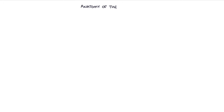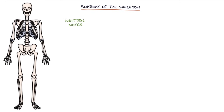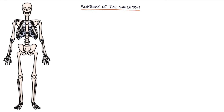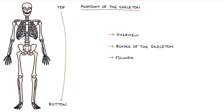Hi, this is Tom from ZeroToFinals.com. In this video, I'm going to be going through an overview of the anatomy of the skeleton. You can find written notes on this topic at ZeroToFinals.com/skeleton, and flashcards to test your knowledge at ZeroToFinals.com/digital-flashcards. We're going to go from top to bottom, taking an overview and learning the basic bones of the skeleton, which will help create a solid foundation before we look at each bone and joint in more detail in later videos.